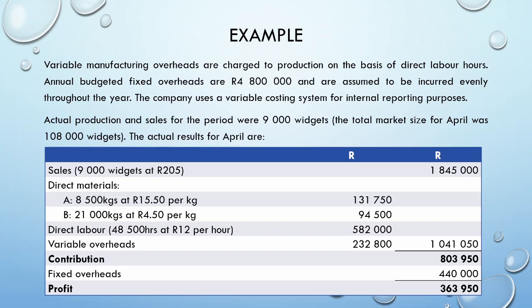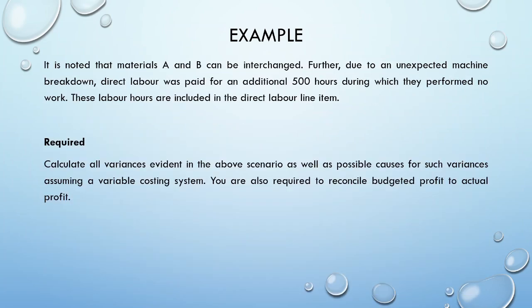We can see here that our final profit was lower at 363,950 rand. It is then noted that materials A and B can be interchanged. Further, due to an unexpected machine breakdown, direct labor was paid for an additional 5,000 hours, during which they performed no work. These labor hours are included in the direct labor line item. For this example, we are then required to calculate all variances evident in the above scenario, as well as possible causes for such variances, assuming a variable costing system.